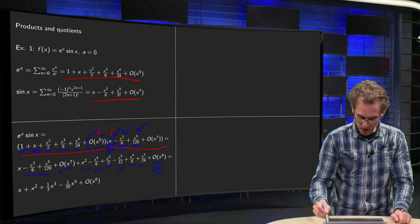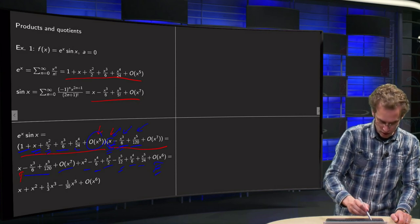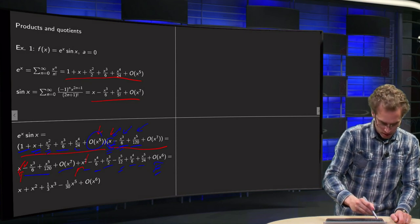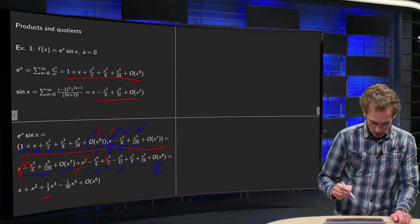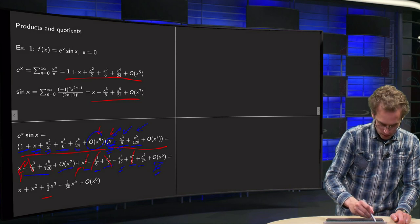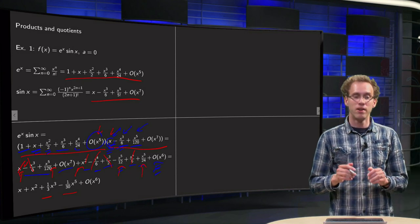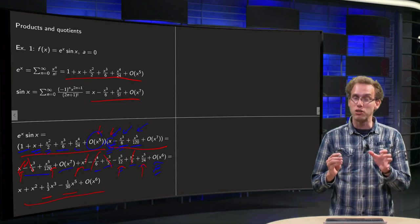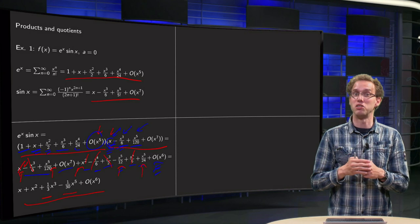Let's clean up some of the mess. For x to the power 1 we have x. For x squared we have x squared from the 1 times x squared term. For x cubed terms: minus 1 over 6 plus 1 over 2 gives 1 over 3. For x to the power 4 terms, here and here they cancel out. For x to the power 5 terms: 1 over 120 minus 1 over 12 plus 1 over 24 equals minus 1 over 30. So there we have the product of the two power series up to order x to the power 6. You see it is doable, it is not so difficult, but it is really annoying.